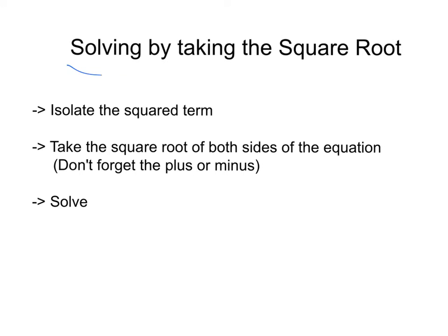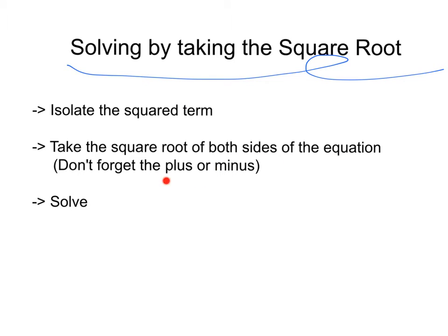To solve by taking the square root, we can break it down into three simple steps. First, isolate the squared term — get whatever is squared by itself. Second, take the square root of each side of the equation — don't forget the plus or minus. Third, just solve like you would normally.